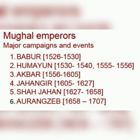In 1657–1658 there was a conflict over succession amongst Shahjahan's sons. Aurangzeb was victorious and his three brothers, including Dara Shikoh, were killed. Shahjahan was imprisoned for the rest of his life in Agra.